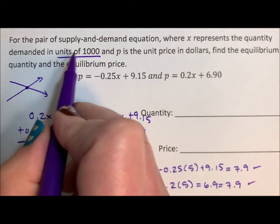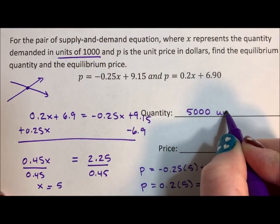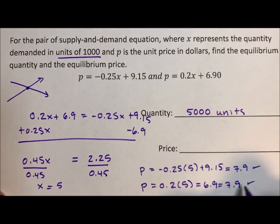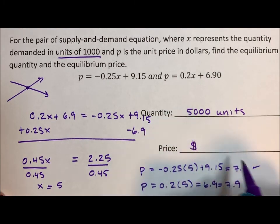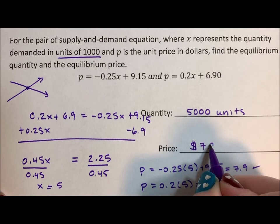So it's in thousandths of units. So it's 5,000 units. This is the price. So dollar sign. We never do one decimal place for money. So $7.90.